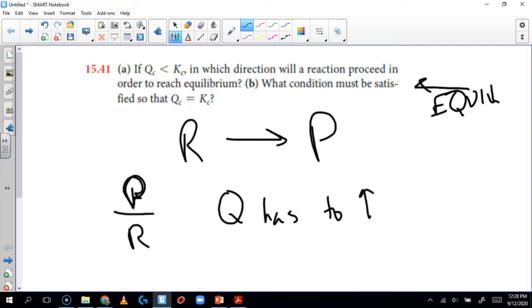So how are we going to get Q, which is written as a ratio of the products to reactants, how are we going to get that value to increase? Well, the way we do that mathematically is by increasing the products.